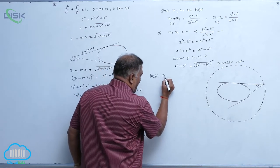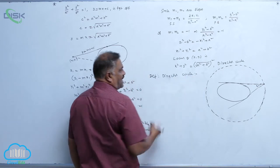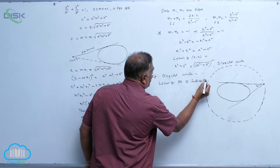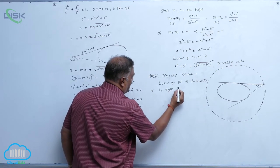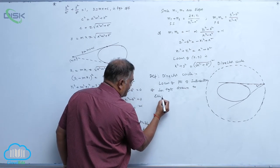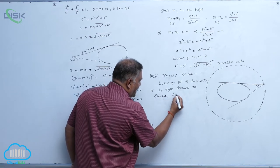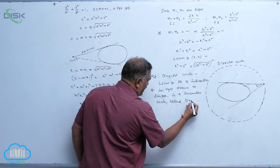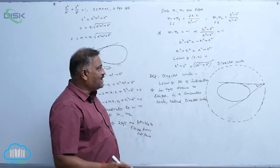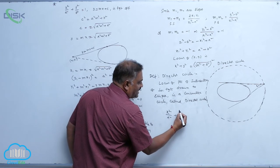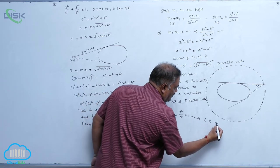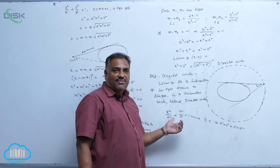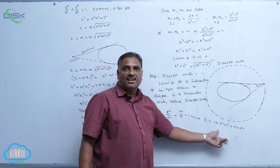So the definition of director circle: the locus of points of intersection of perpendicular tangents drawn to an ellipse is a concentric circle called the director circle. For standard ellipse x²/a² + y²/b² = 1, the director circle is given by x² + y² = a² + b². Remember: whether a > b or b > a, there is no change in the director circle equation.